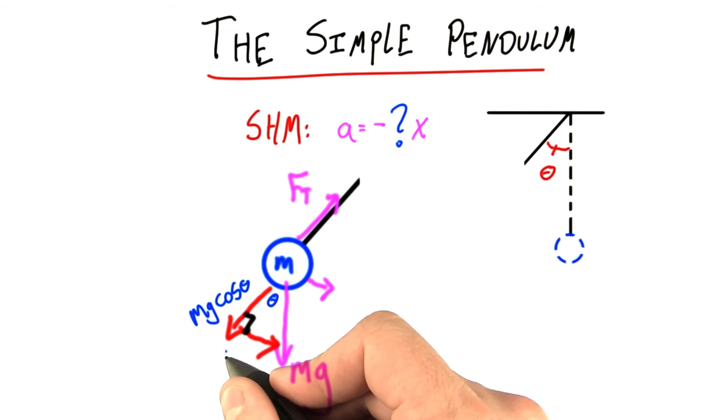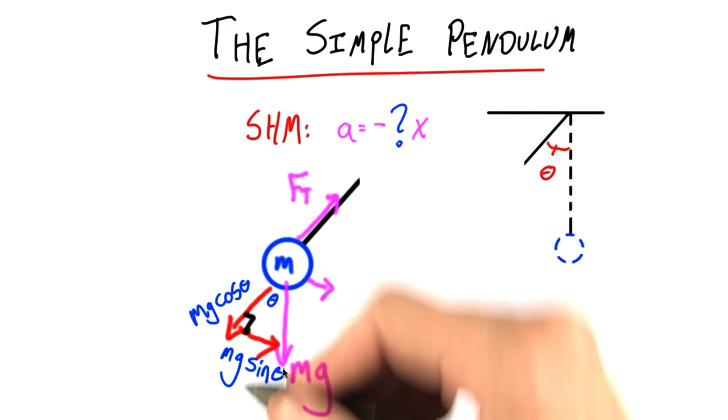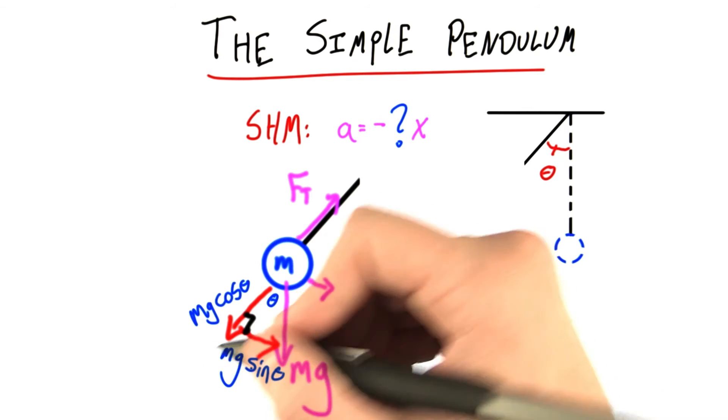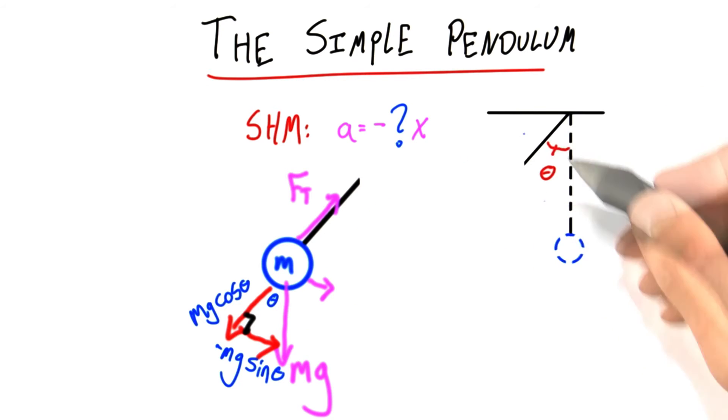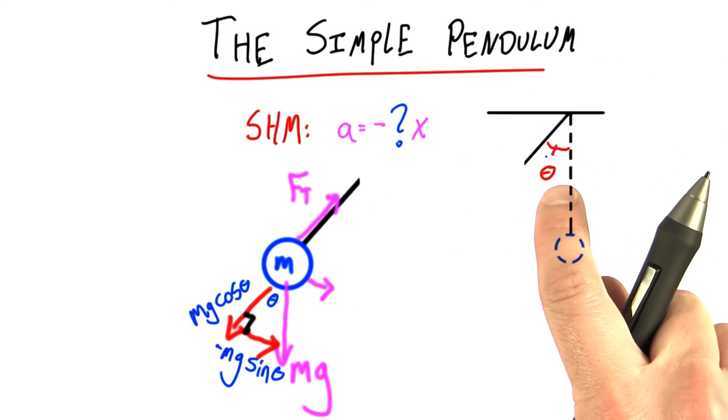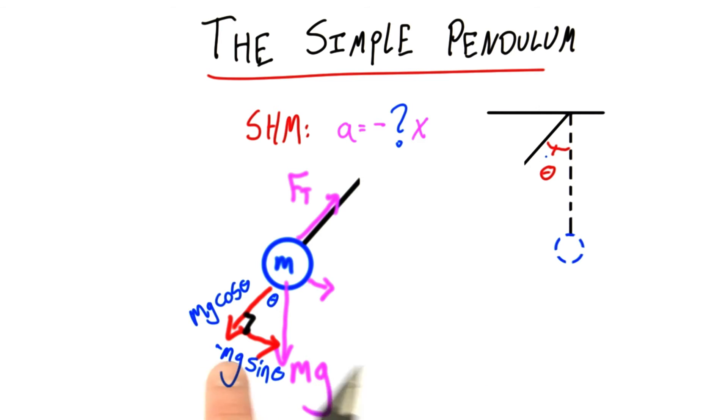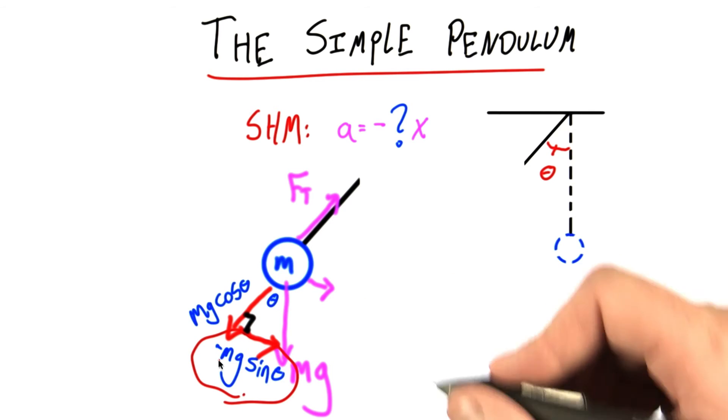And that force that's doing this acceleration is mg times the sine of theta. So this is the force—actually I should say that it's negative. Because if I pull it back to the left, I would normally call that a negative angle. The force is to the right, so this negative sign is actually important. So we have this force doing our acceleration, minus mg sine theta.